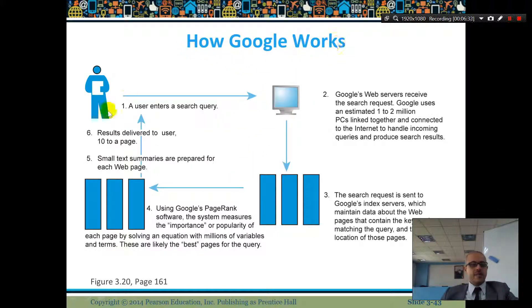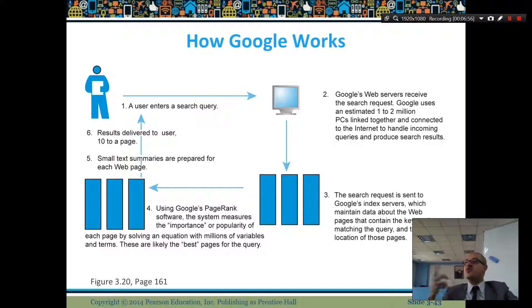How does Google work? You write your search, and Google's web server receives the search request. Then Google uses its one to two million PCs linked together and connected to the internet to take the computer inquiry and produce search results. The search request is then sent to Google's index server, which maintains data about web pages containing keywords matching the query and the location of those files.